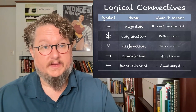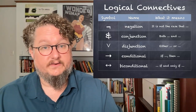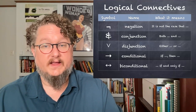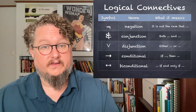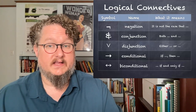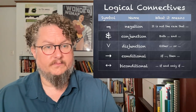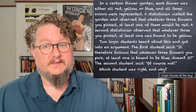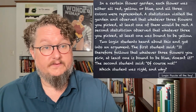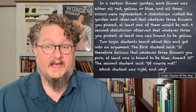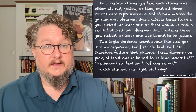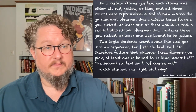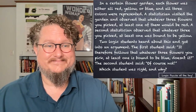Those are the logical connectives that make up SL: negation, conjunction, disjunction, conditional, and biconditional. In the next lecture, we'll practice translating between English sentences and arguments and sentences and arguments in SL, looking at more complicated examples. Before we wrap up, did you come up with an answer to the logic puzzle? Share it on Discord but don't forget to use the spoiler tag. I look forward to seeing you in our next lecture where we'll talk about symbolization and translation in SL.